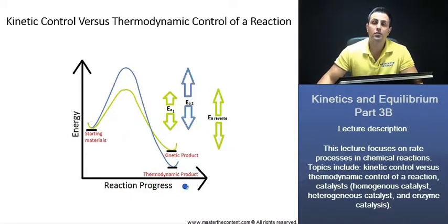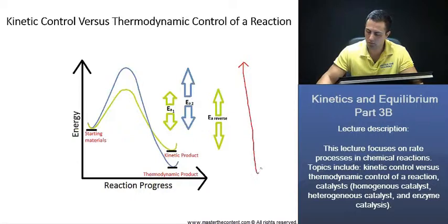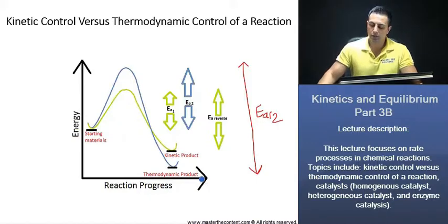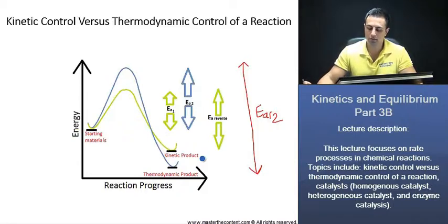Now say we raise the temperature even more. Say we raise the temperature enough to, we'll call this here the reverse activation energy for the thermodynamic product. If we increase the temperature enough now to get back over the reverse thermodynamic product and high enough to get back over the kinetic product, then our major product will be the thermodynamic product that we see here. The ratio of thermodynamic product to kinetic product can be found through the respective equilibrium constants for the thermodynamic and kinetic products.